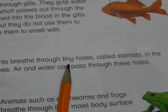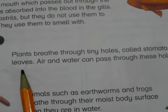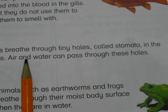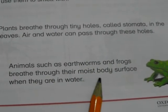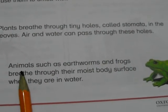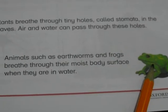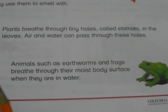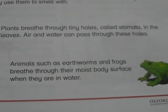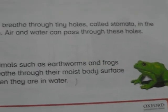Plants breathe through tiny holes called stomata. Air and water can pass through these holes. Animals such as earthworms and frogs breathe through their moist body surface when they are in water — they breathe through their skin.